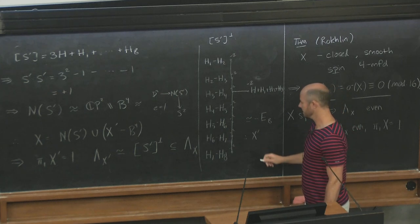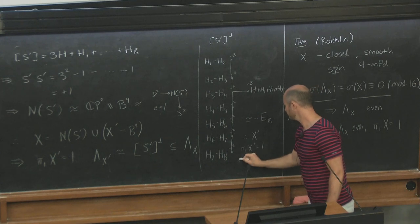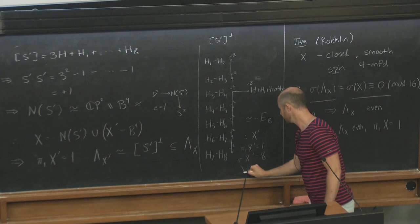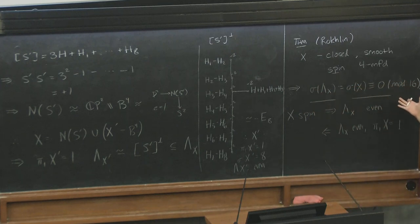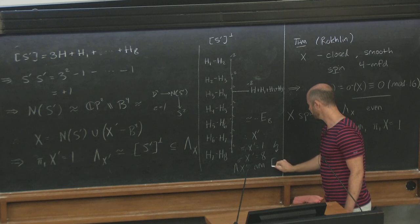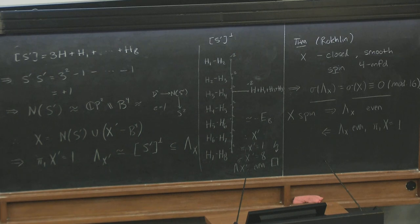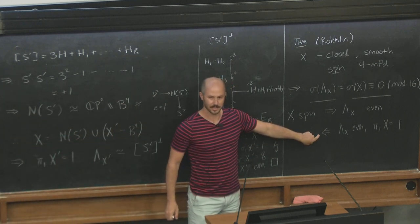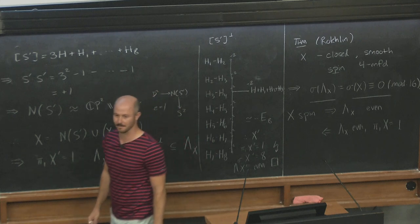Therefore X' is an impossible closed smooth four-manifold: its fundamental group is trivial, but its intersection lattice λ(X') is −E8, which is even. This would contradict Rokhlin's theorem — the signature is −8, which is not a multiple of 16. This is an impossible four-manifold, giving the conclusion that the class 3H cannot be represented by a sphere. If you're asking whether it's obviously spin: if you know the intersection form is even and the fundamental group is trivial, then by theorem the manifold is spin, so Rokhlin applies.